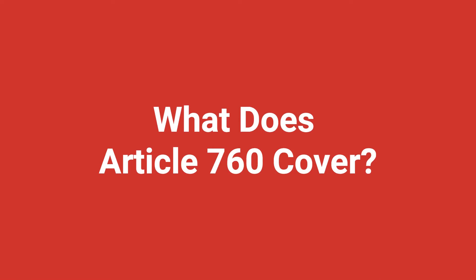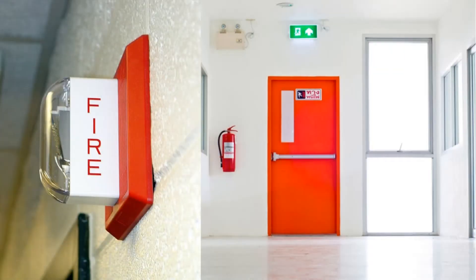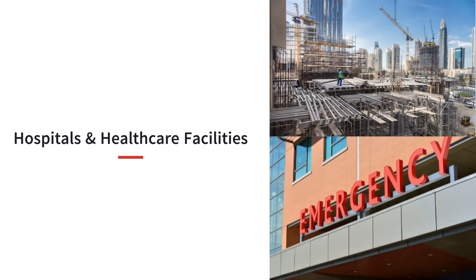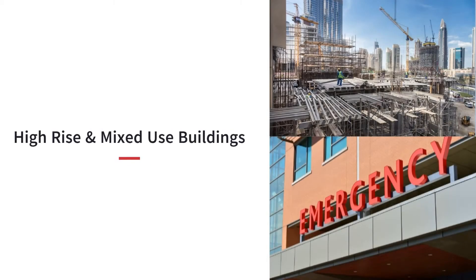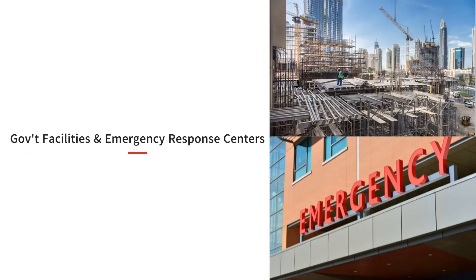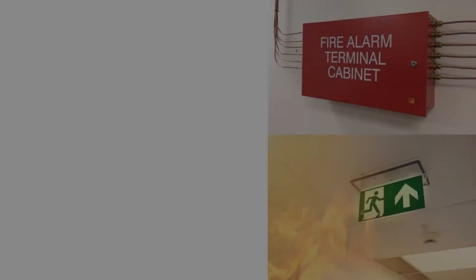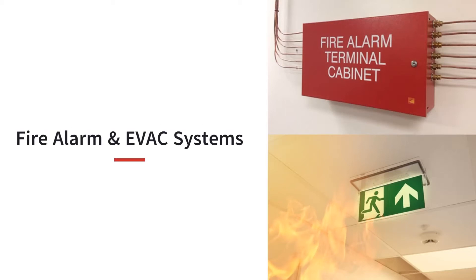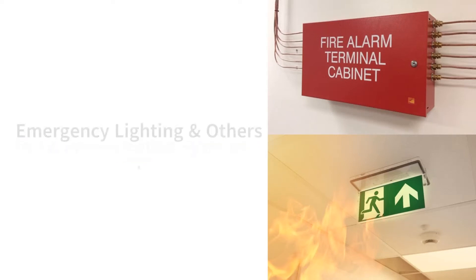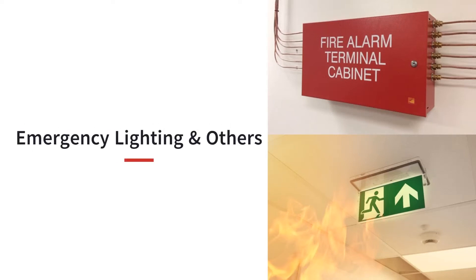Article 760 governs many important emergency systems required in a variety of buildings, including hospital and health care facilities, high-rise and mixed-use buildings, government facilities and emergency response centers, stadiums, casinos, and places of assembly. The critical systems within these buildings governed by Article 760 include fire alarm and evacuation systems, smoke evacuation and control, fan and pressurization systems, emergency lighting, and others.